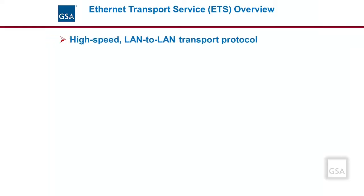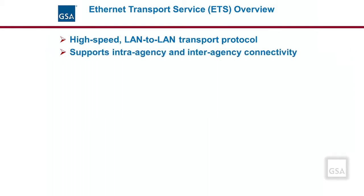Ethernet is another of the data services available under EIS. Some claim that ETS is the future. Ethernet is a high-speed, land-to-land transport protocol for networks. It was initially developed as a LAN standard for connecting over both copper and fiber media at high speeds, and has evolved to connect users across large distances long haul. The Ethernet transport service under EIS supports both intra- and interagency connectivity.